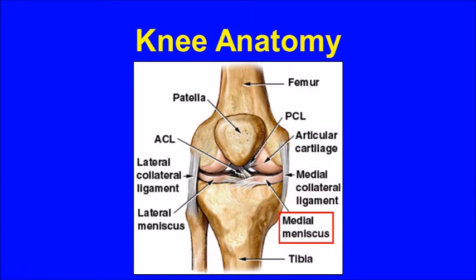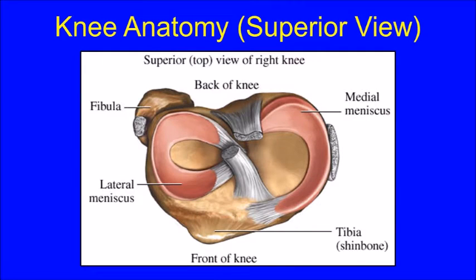The meniscus on the inside part of the knee is called the medial meniscus, and the meniscus on the outside part of the knee is known as the lateral meniscus. If the thigh bone is removed and the shin bone is viewed from above, you can see how the meniscus are shaped like the letter C and follow the outside curvature of the surface of the shin bone.